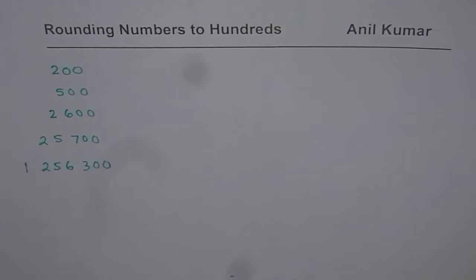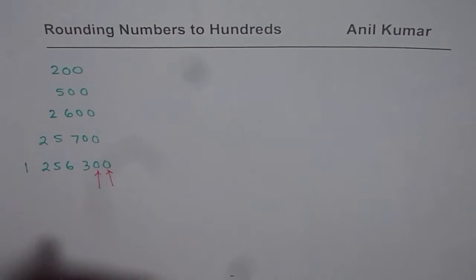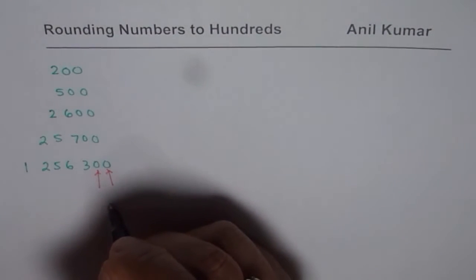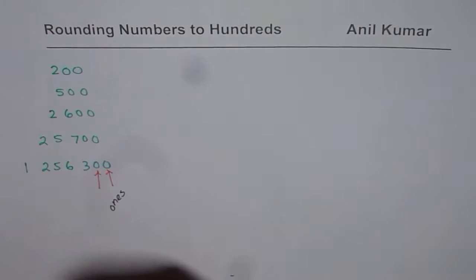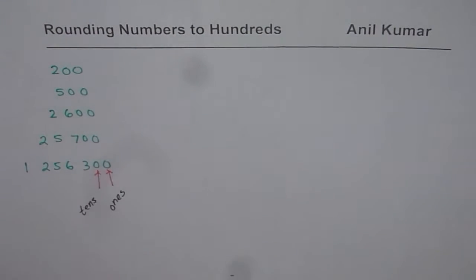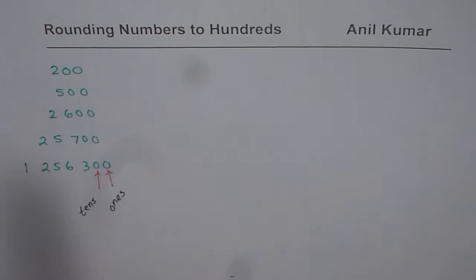You may get even much bigger numbers like 1,256,300. Now in all these numbers, what you notice is that we have zeros in two positions. The first position where the zero is, is the ones position. So in ones position we have zero and also in tens position we have zero. So whenever you round to hundreds, this is what you should be getting.